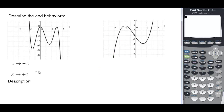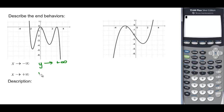We want to describe the end behaviors here. As x gets very small, the y values are getting very large, so y is going to go toward positive infinity. And as we go toward large x's, we have to go down to hit our graph, so y would be heading toward negative infinity. We would say that would be an up-down end behavior.